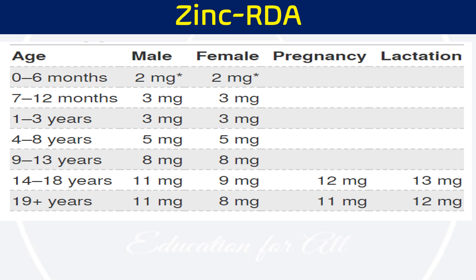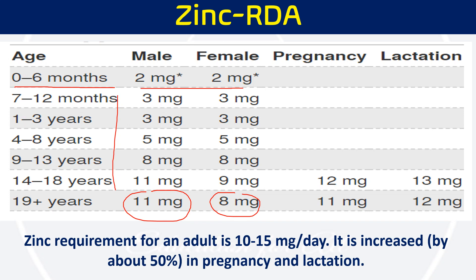The daily dietary requirement of zinc increases as age grows. For 0 to 6 months of age, the requirement is 2 mg for both male and female. In adult humans, the requirement is 11 mg for males and 8 mg for females, so roughly 10 to 15 mg per day. During pregnancy and lactation, the requirement increases by roughly 50%.